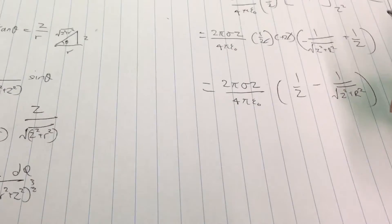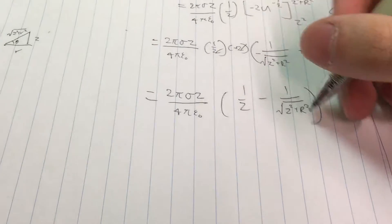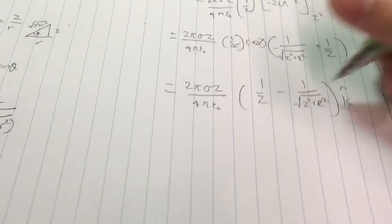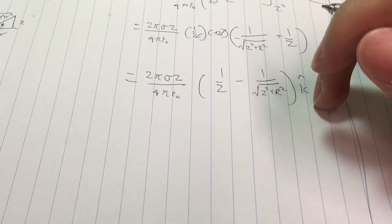We're basically done here. This is the electric field we're looking for. This points upward. Don't forget, this is a vector. I should really add the unit vector. So this is the answer we're looking for.